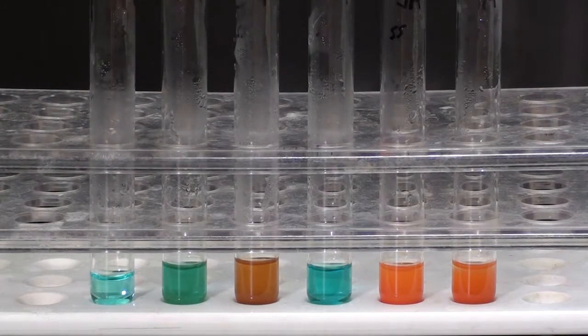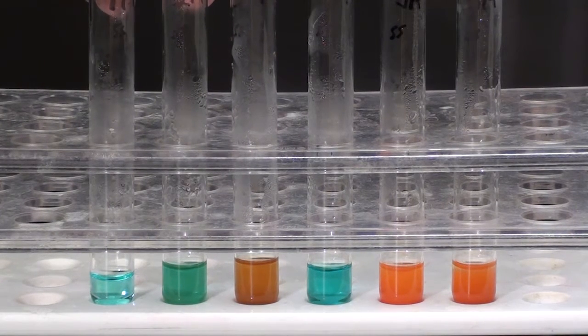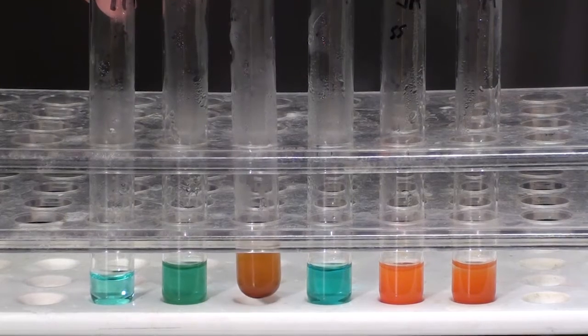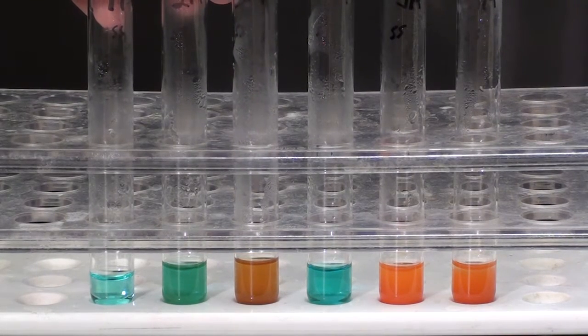Tube three was maltose, a sugar, and water left at body temperature for 30 minutes. You get a nice brick red color. That's the reaction between Benedict's and maltose.